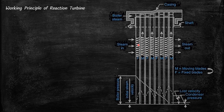In the moving blades, which are attached directly to the rotor of the turbine, as the steam enters, the increased velocity decreases and this decreasing velocity is converted to work. Again in the second stage, it enters the set of fixed blades and the velocity increases again since the pressure drops. Then it enters the moving blade, its velocity drops, and the work is extracted.